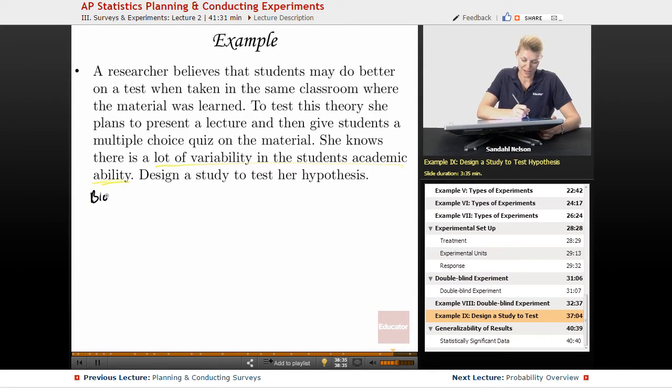So we will block on academic ability. Maybe we'll have our blocks be A, B, C, D, F students. It depends how big the class is. We're going to block on... probably, actually, D and F could go together.